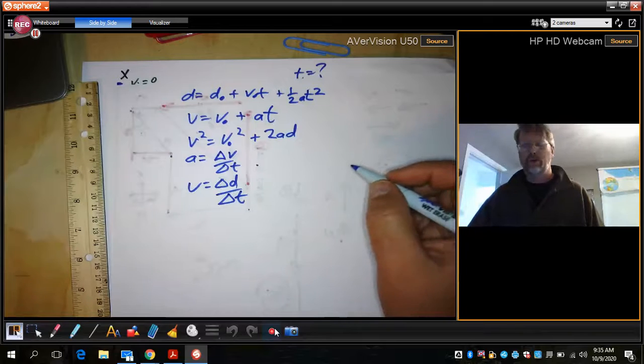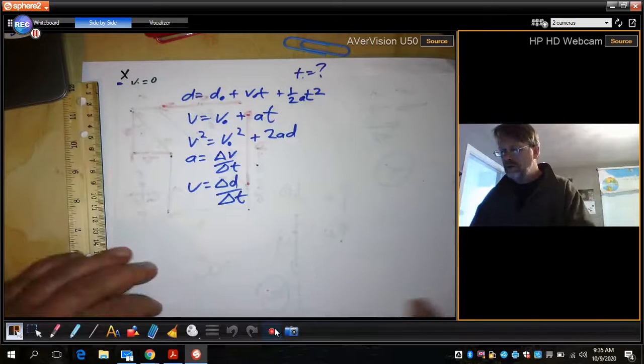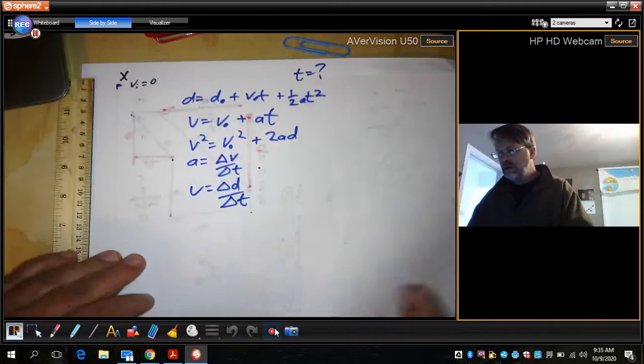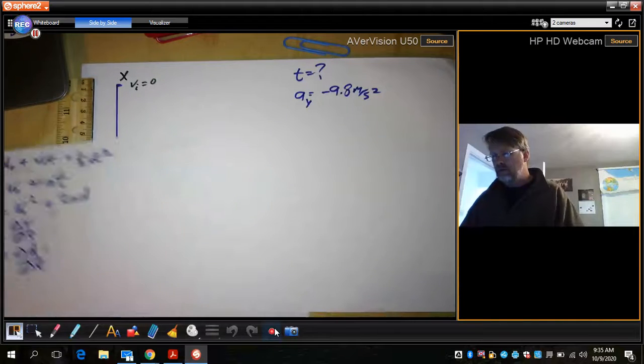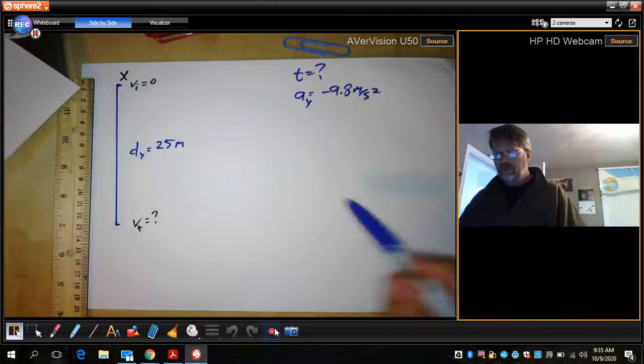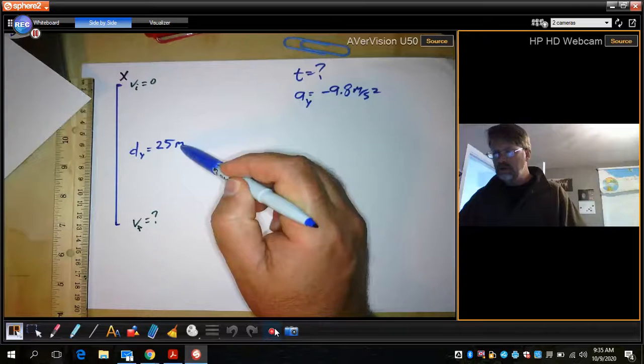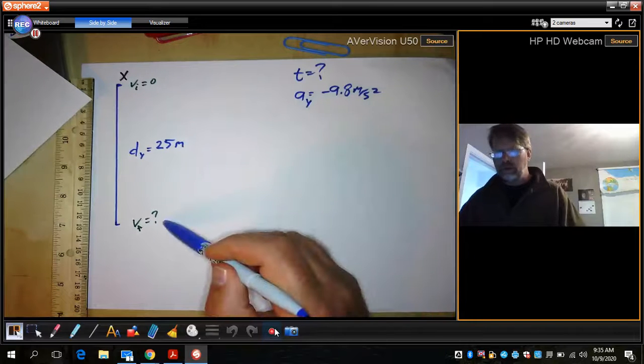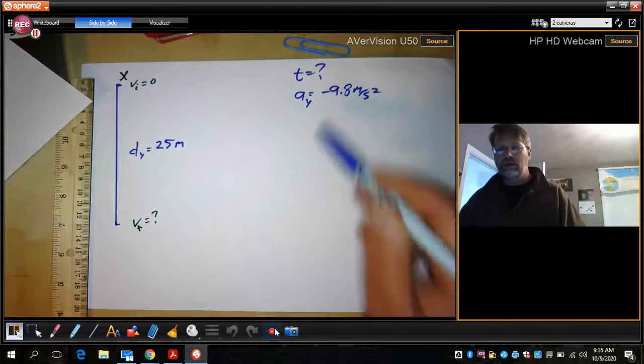That gives us some pretty good choices here. So the question is which one is going to answer this question of we know distance and we want velocity, with distance and acceleration.